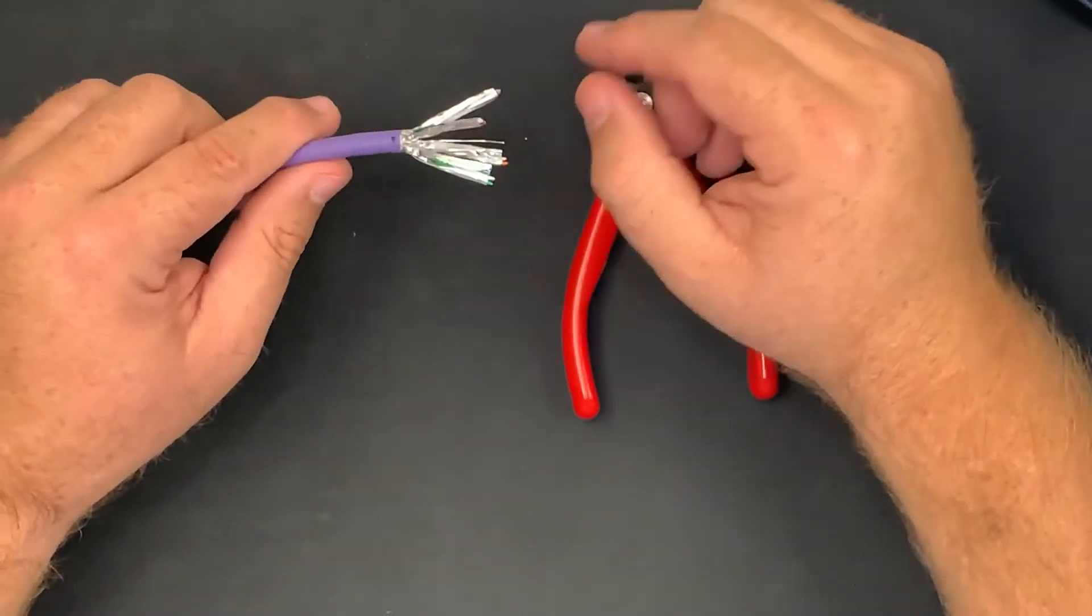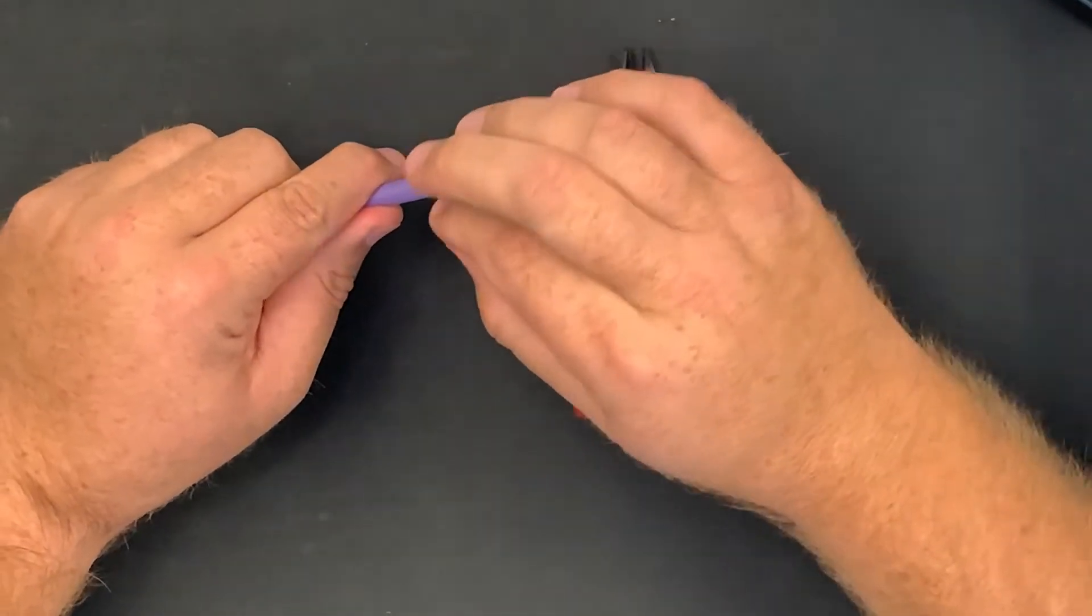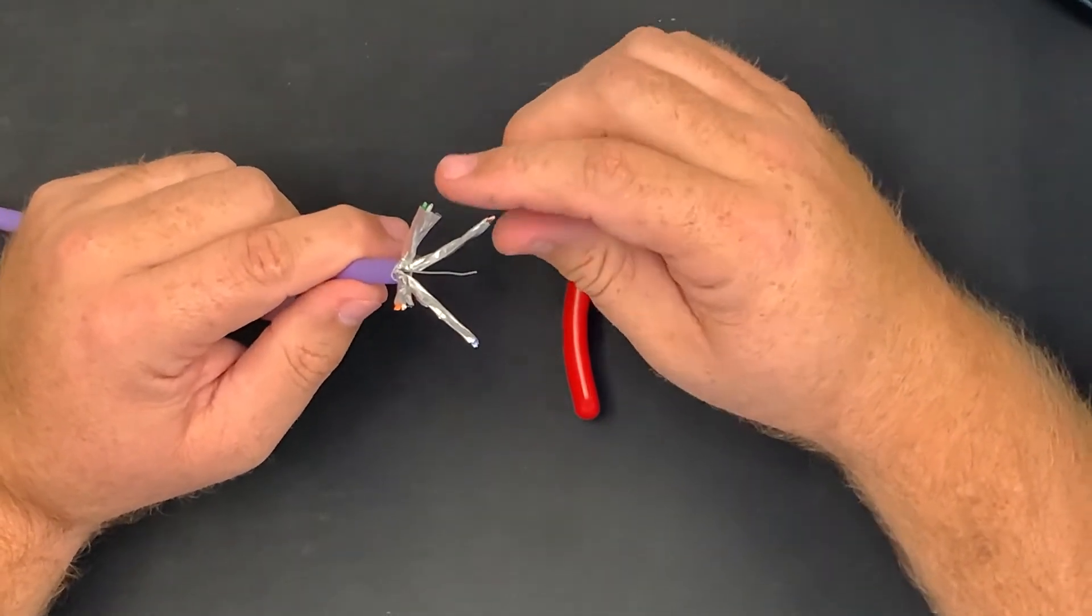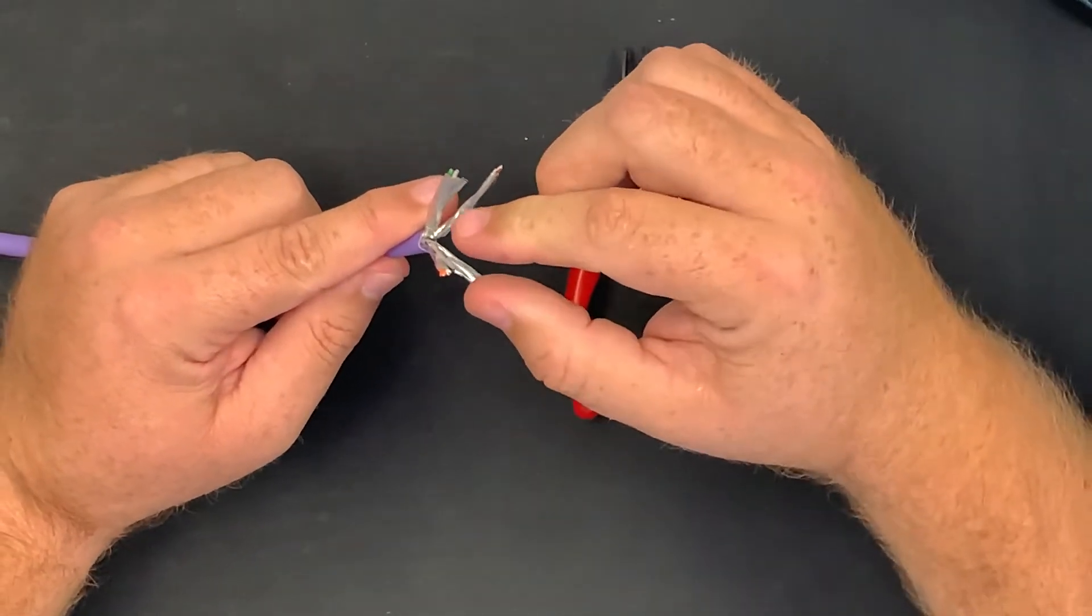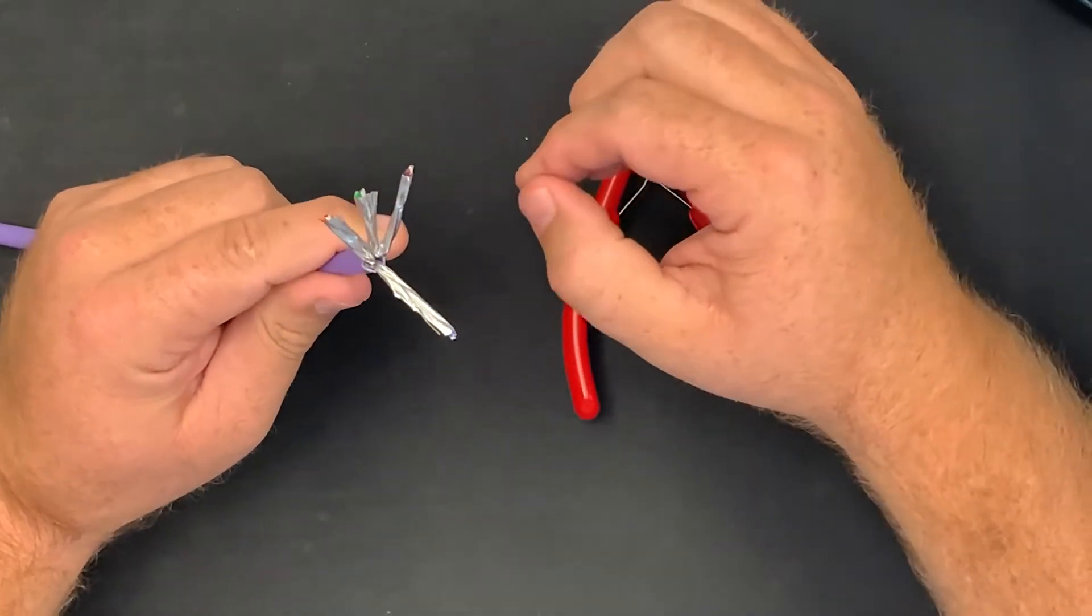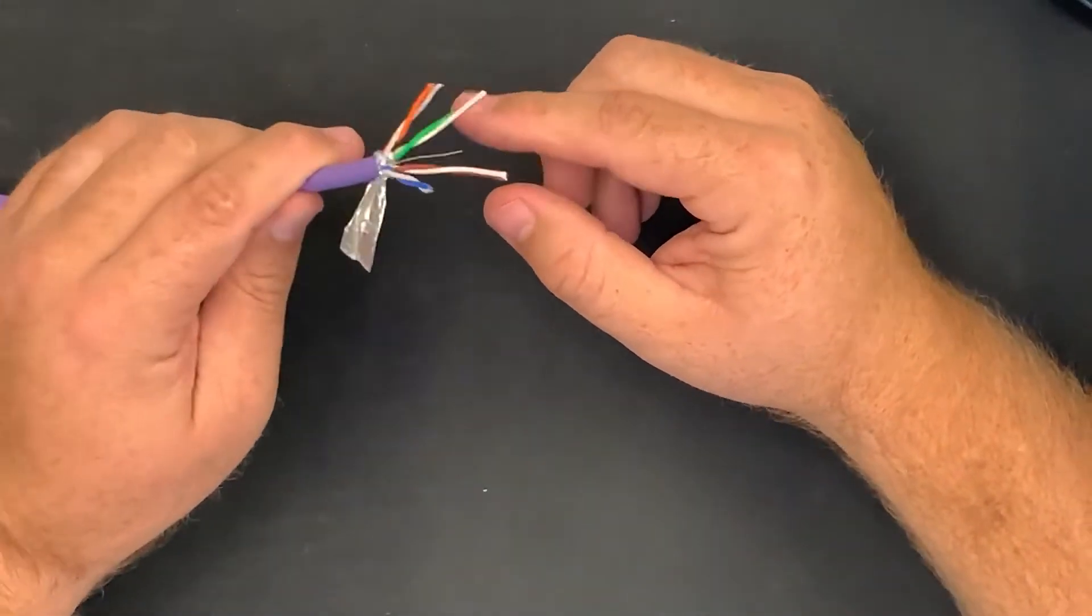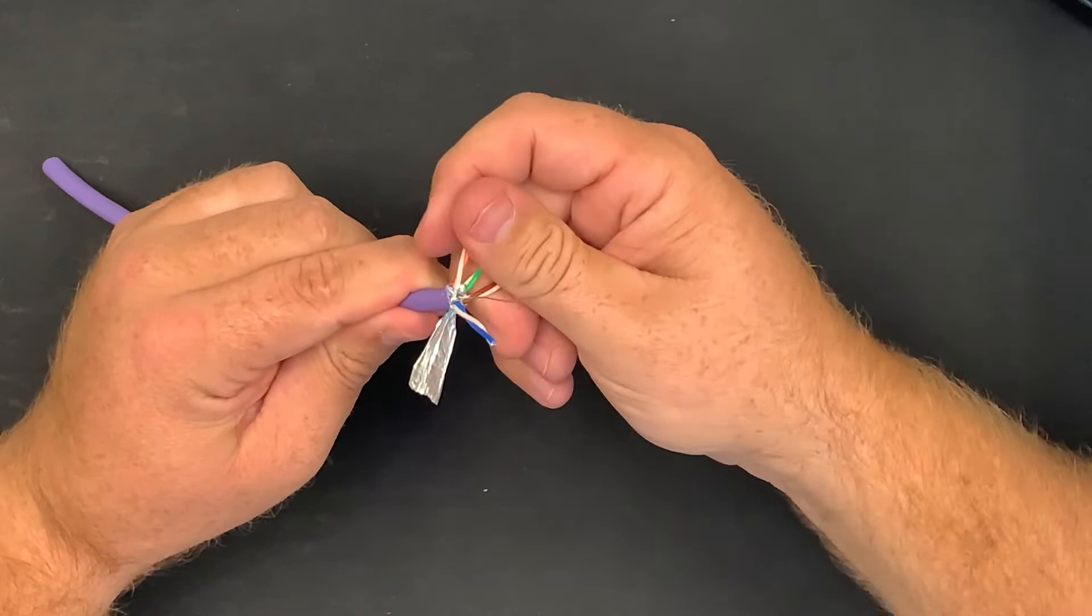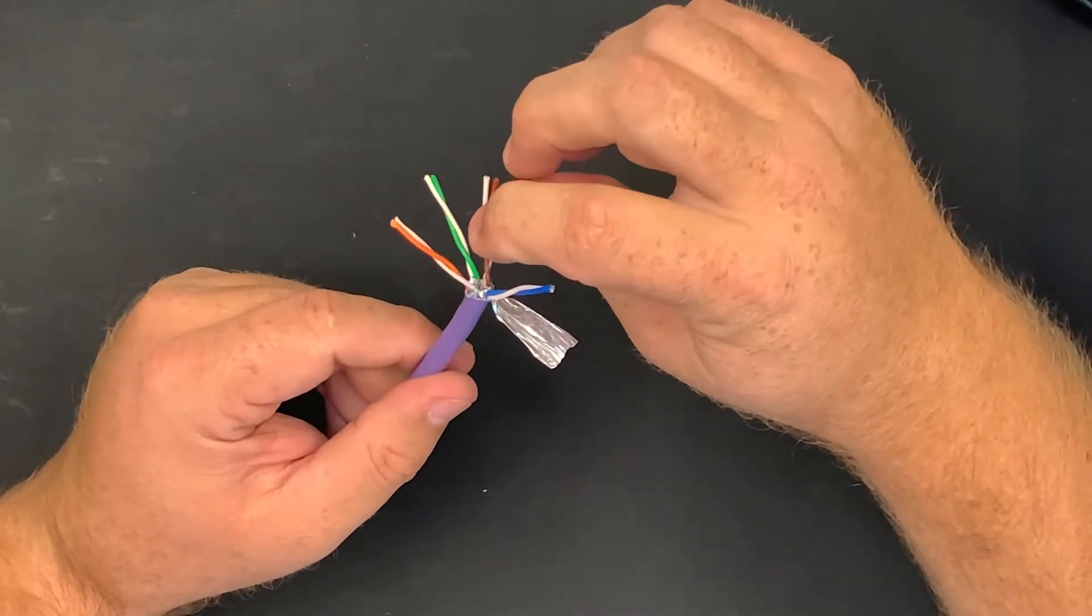After you have removed the cable jacket, you will see that all the pairs have foil around it and you have a drain wire. Now, what you need to do now, you can leave one foil on a pair with the drain wire and you can remove the other pairs. You can remove it from the pairs and cut it off. Now, you will see I have removed three of the foils on the pairs. I have one foil I have left and the drain wire.